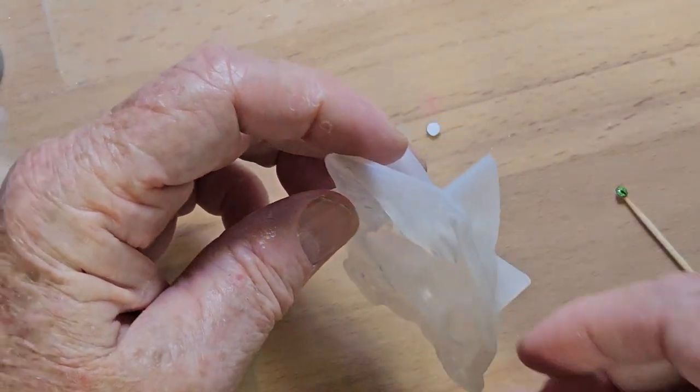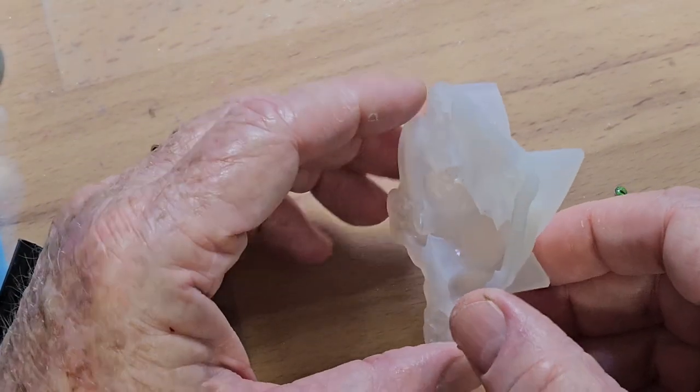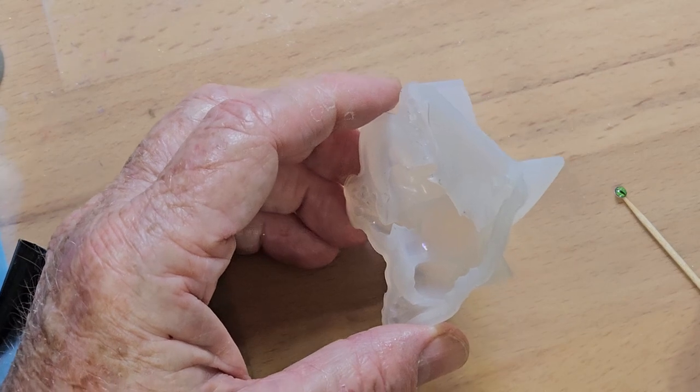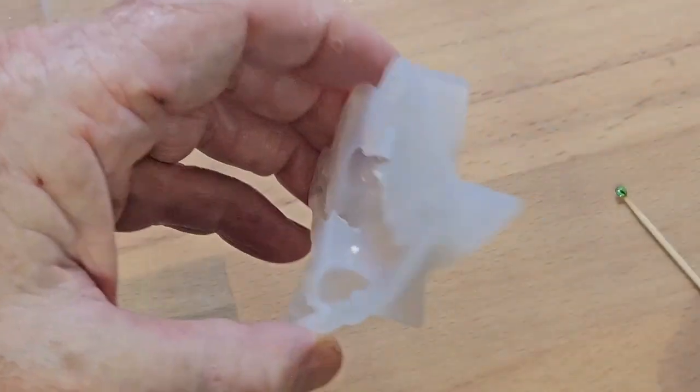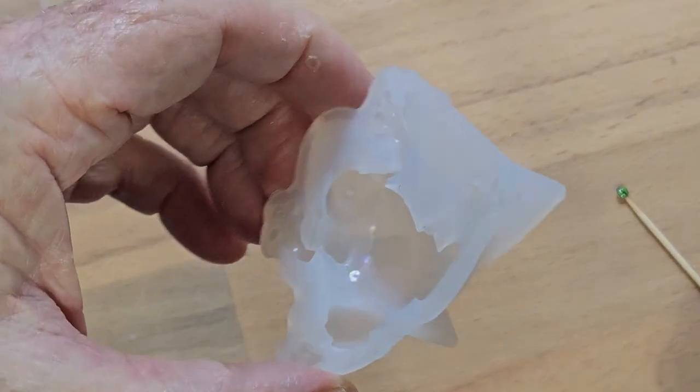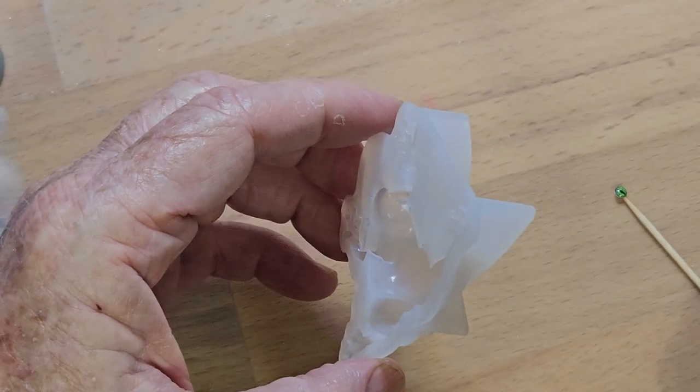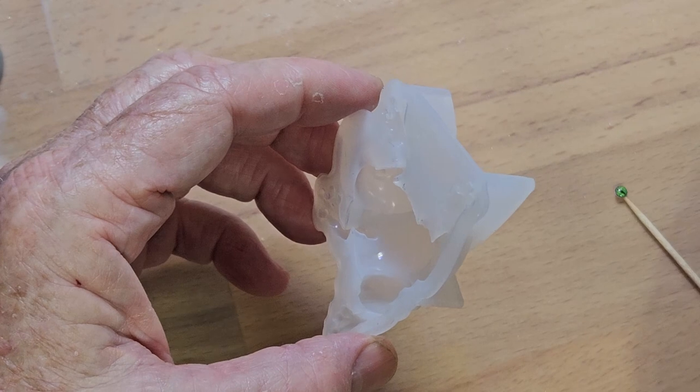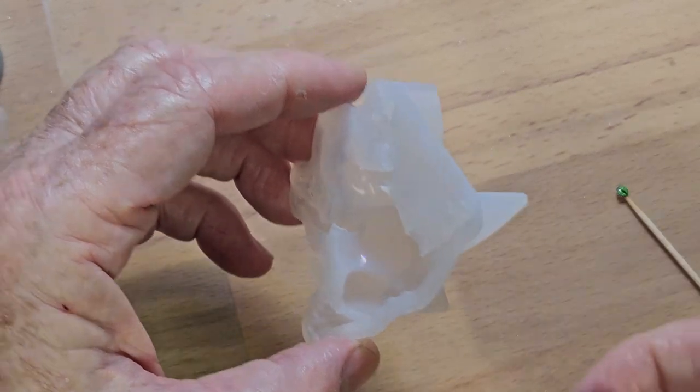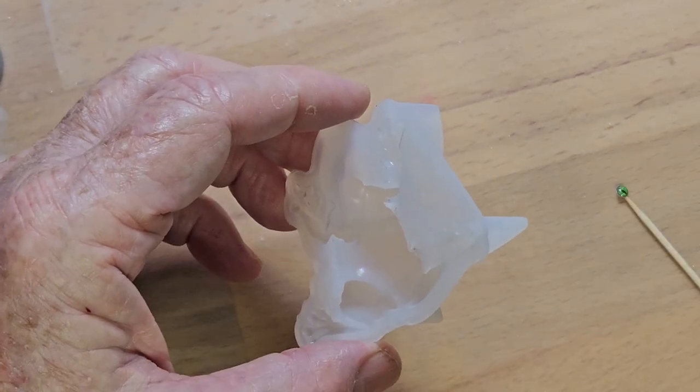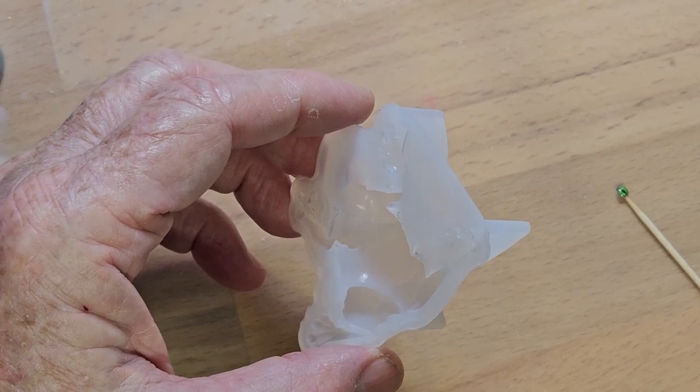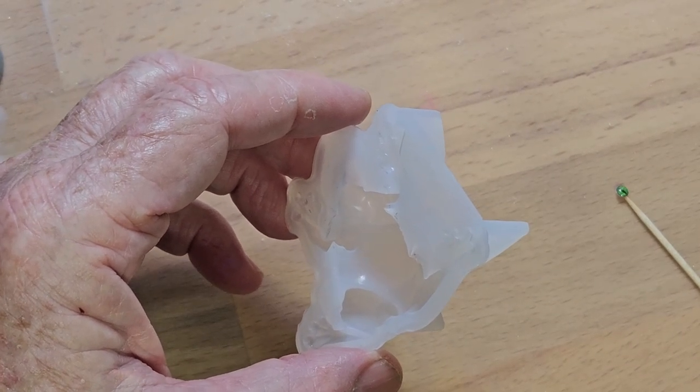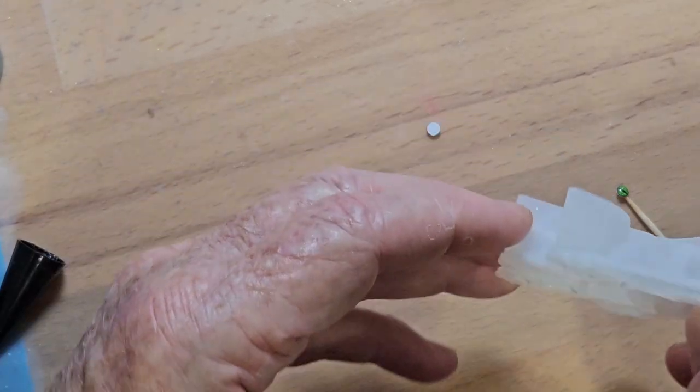I don't know if you can see that in there very well or not, but there's a little dab of that UV resin in the place. Now with frogs, I've seen many people put these frogs' eyes in. Frogs' eyes look out the side, not straight up.